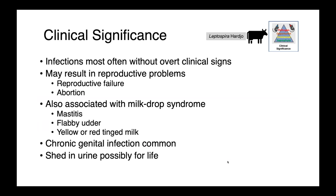Starting with Leptospira serovar Hardjoe in cattle: infections most often occur without overt clinical signs. We may see reproductive problems — reproductive failure or abortion — and it's also associated with milk drop syndrome. Affected animals may have a flabby udder and yellow or red-tinged milk. We can also see chronic genital infections with Leptospira Hardjoe, not just of the kidneys but of the lower urinary tract. It is shed in the urine, possibly for life, making it very difficult to clear these host-adapted strains.